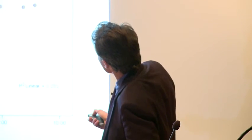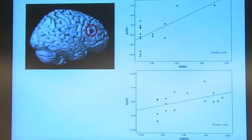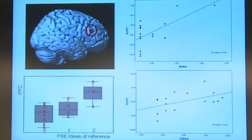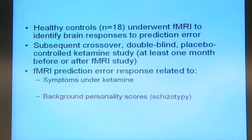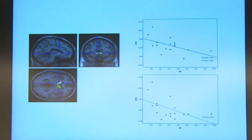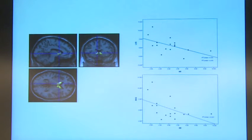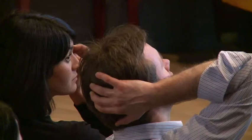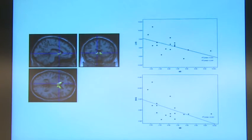Moreover, dissociative symptoms also correlated with frontal sensitivity. So we've replicated the idea that your frontal sensitivity to prediction error predicts what it's going to be like when you have ketamine a month later. As for whether this can be predicted by background personality scores: frontal cortex responses can't, but striatal responses are to some extent predicted — on both right and left — by magical ideation scores on a schizotypy scale. The people who show less sensitivity in the striatum seem to be the ones who show the greatest degree of schizotypy in everyday life, though what that means is still being interpreted.